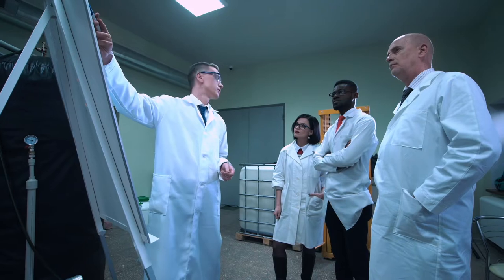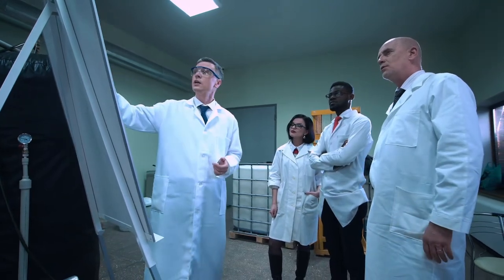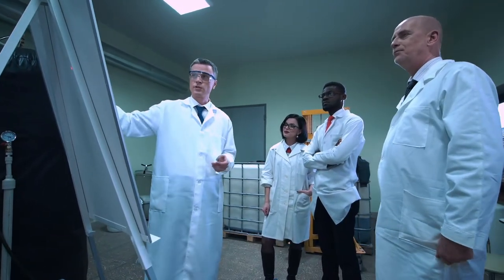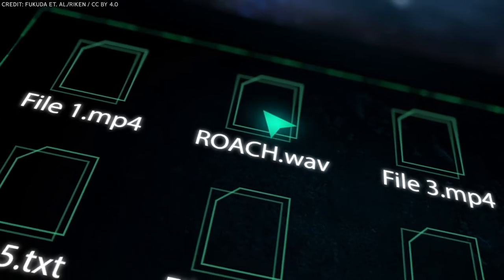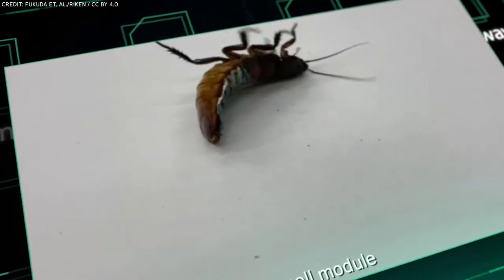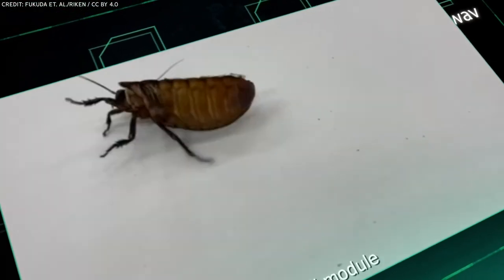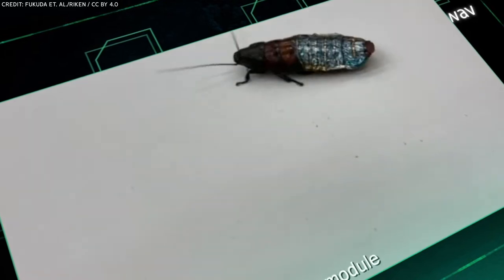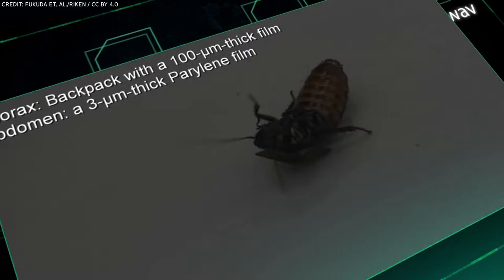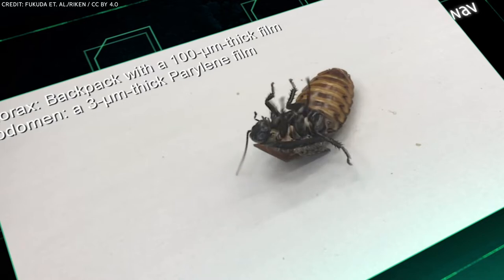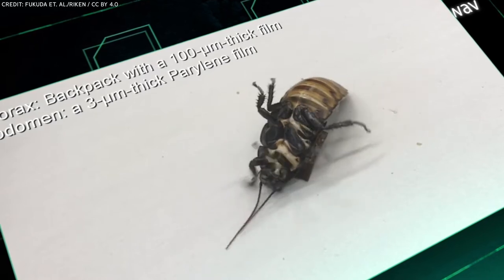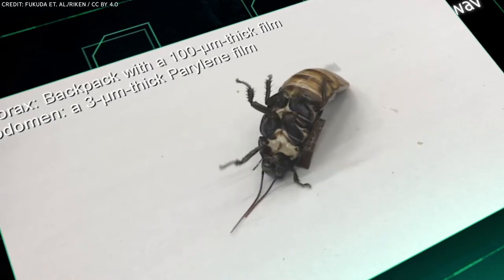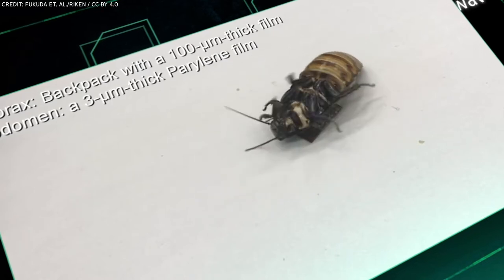But the problem is, you have to provide electricity to the backpack in order for it to transmit and receive signals. In order to find a solution to this problem, the Riken team conducted research on a variety of electrical films that were very thin. They used roaches as subjects for the research and monitored how the roaches moved in relation to the film's thickness. Because of this, they were able to settle on a module that was about 17 times thinner than a human hair.